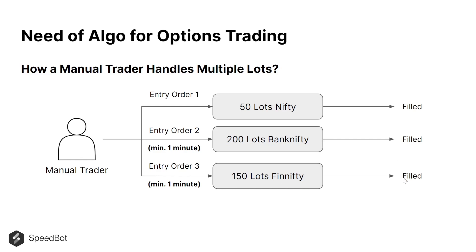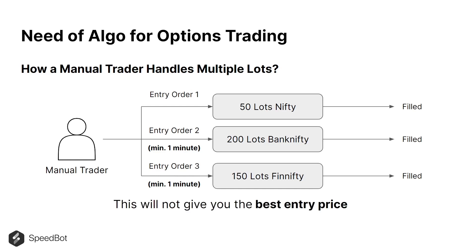Once that is filled, they'll be able to see all their positions — these were the entry positions. The same exercise would be done for the exit orders. What's the issue the manual trader is facing? The manual trader will not get the best entry price, because each time they are punching an order, they are getting the worst price possible. The delay of around one minute might cost them a good amount of profit or loss. This is what we call slippage.